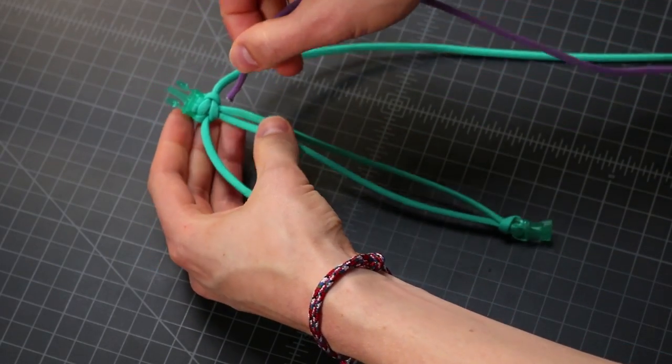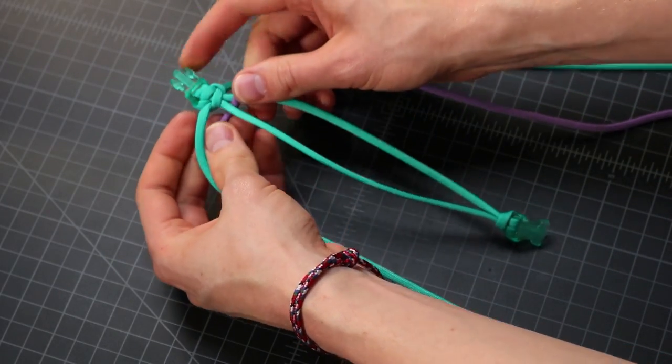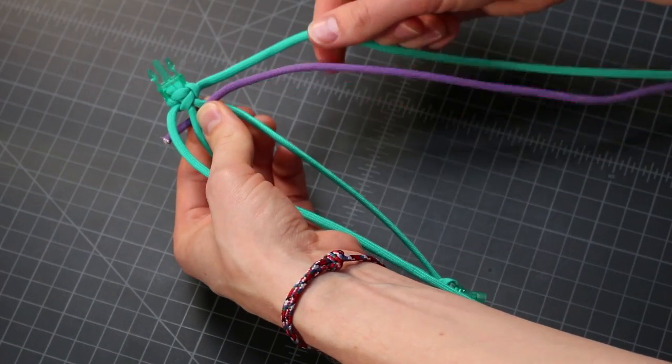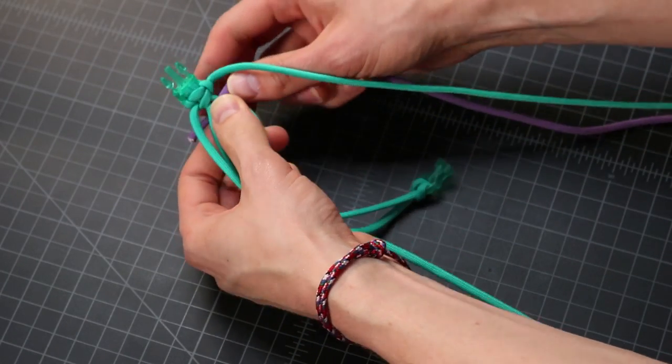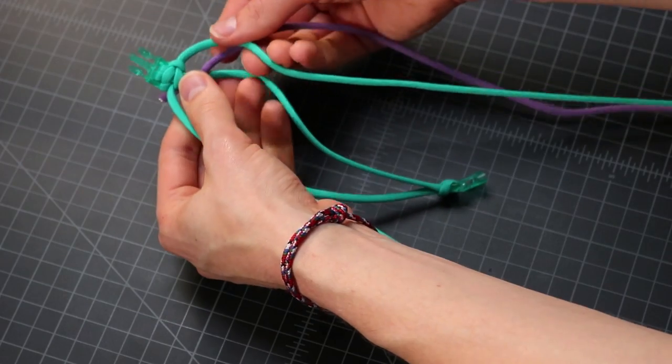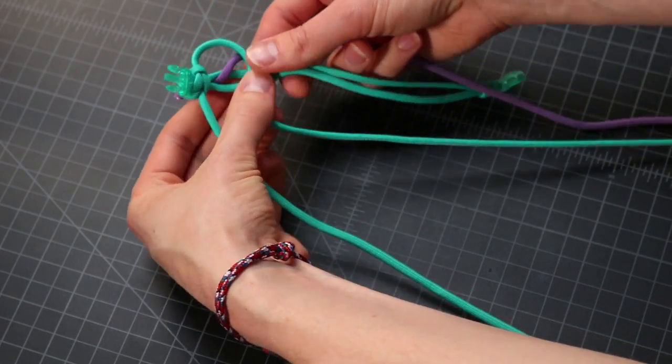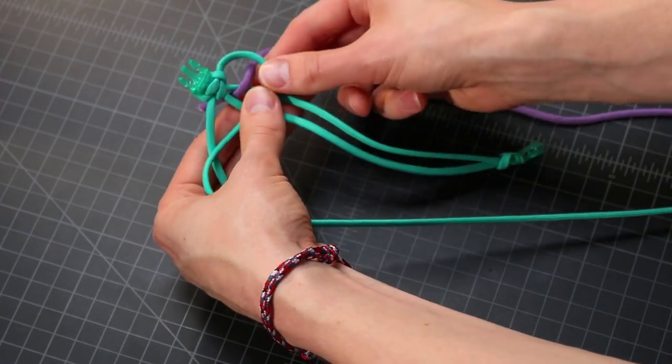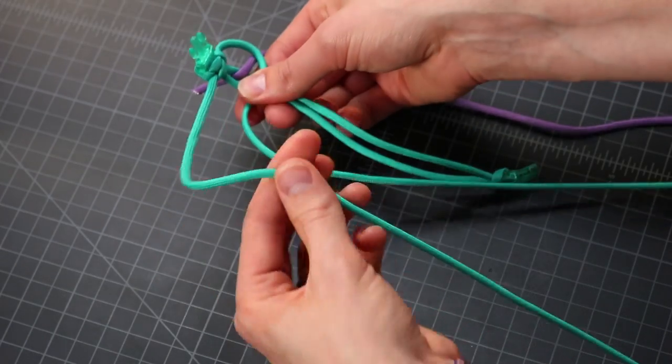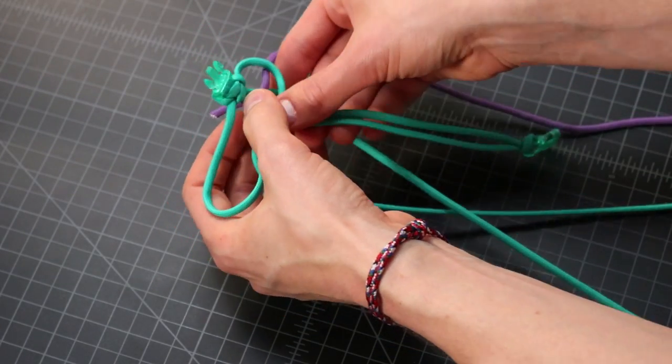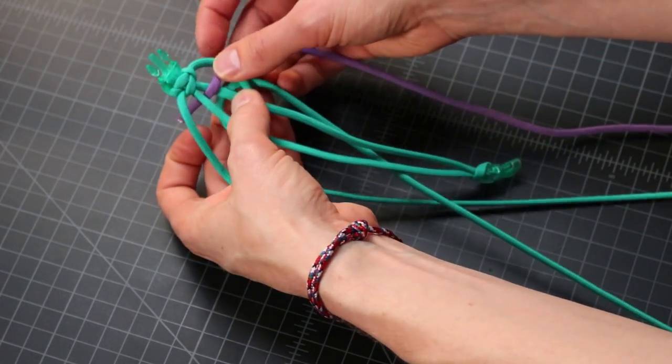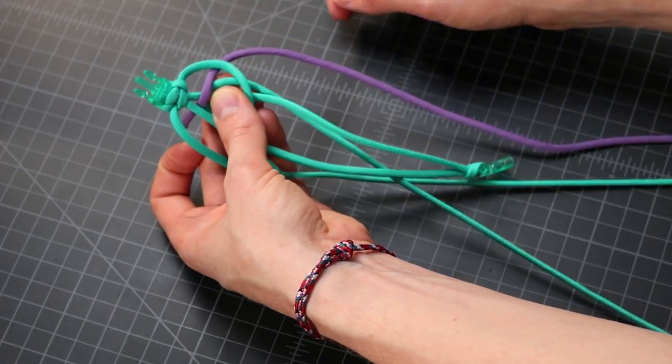To start off, put that lilac cord down through the middle, and then off to the right side. Then as we make our weave, we're going to go right cord over the top, left cord over, around, and then up. You want to go underneath that lilac cord.